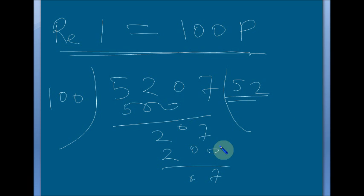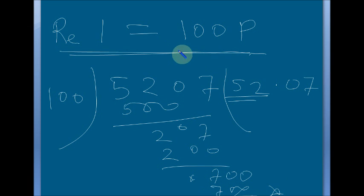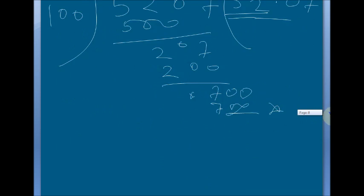So that gives 52 Rupees. I write a decimal point, then 0 — it still won't go, so I write 0 here — and 100 into 7 gives 700, wait, giving 0.07. So the answer comes to 52.07 — just after 2 digits a decimal point is placed in the answer.